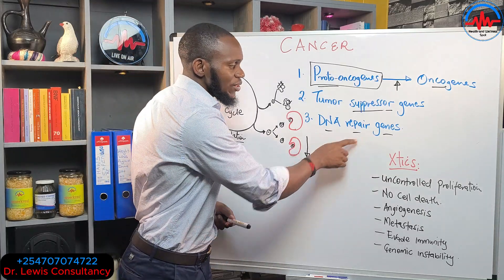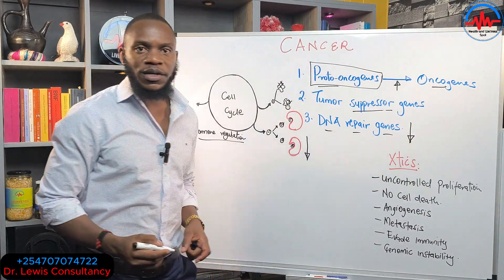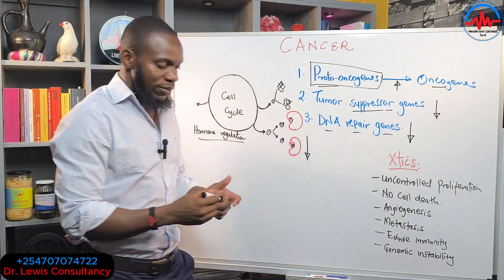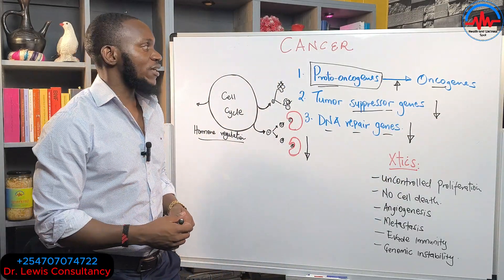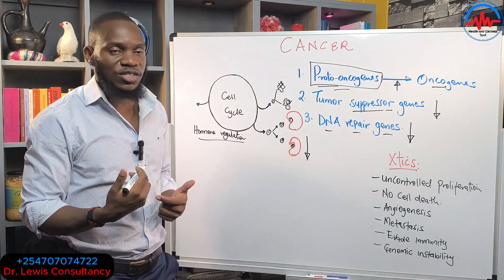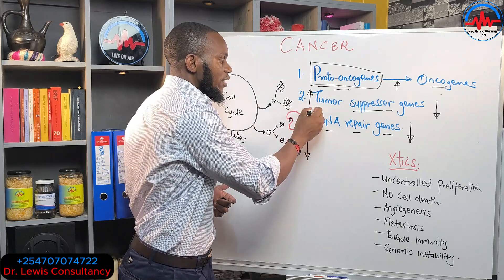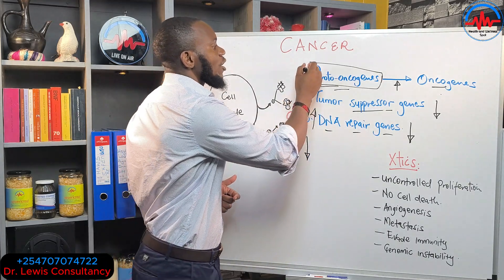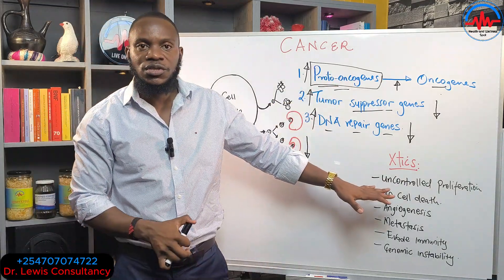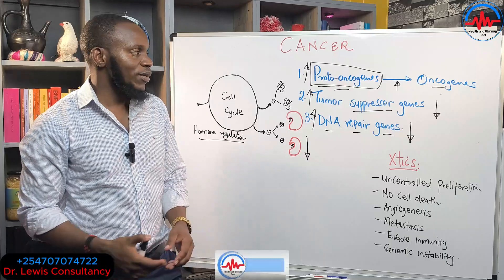If you have low amounts of DNA repair genes, you can expect cancer. If you have low amounts of tumor suppressor genes, you can expect cancer. And if you have conversion of proto-oncogenes into oncogenes, you expect cancer. So our target has to be: raise the tumor suppressor genes, raise the DNA repair genes, and raise our proto-oncogenes. And this can happen through lifestyle modifications and avoiding things that cause inflammation and problems in the system.